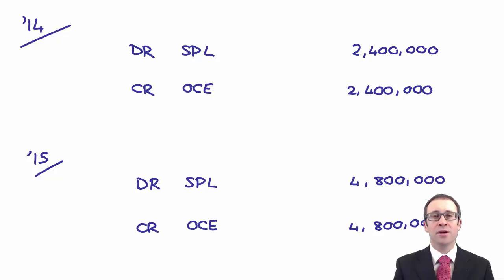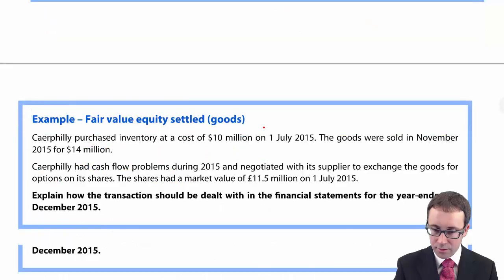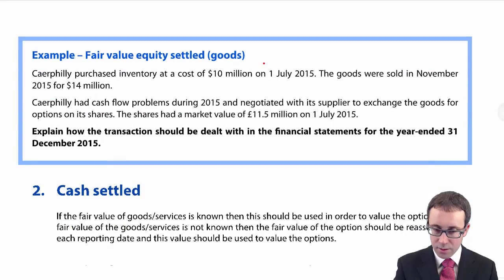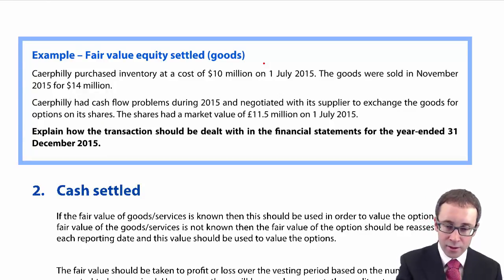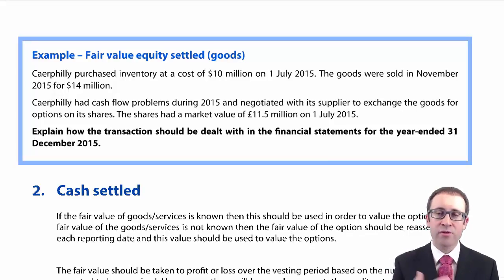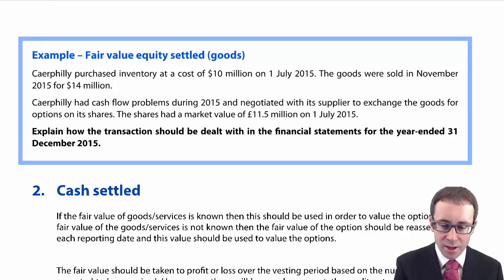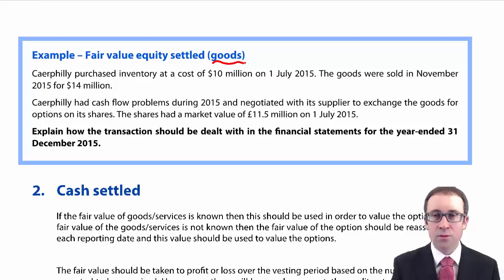Everybody happy with those two examples? They're important in case they crop up within any exam question. Now, pulling it together and finishing off with the third and final example on equity-settled payments. The key bit is that the first two examples were to do with services. This one here is to do with goods.